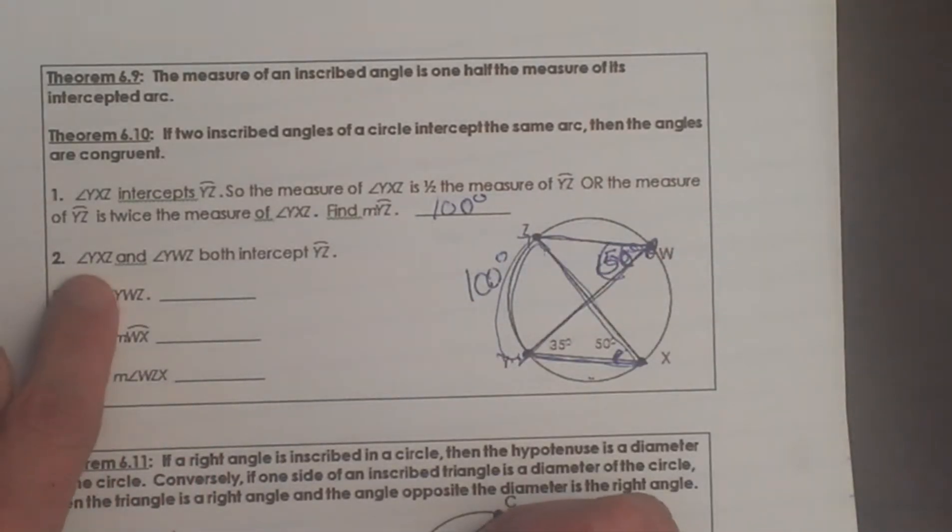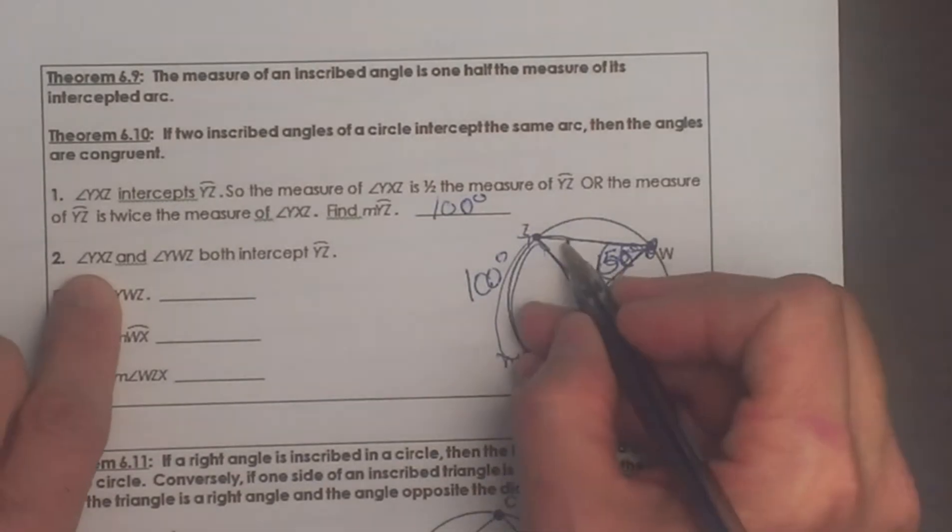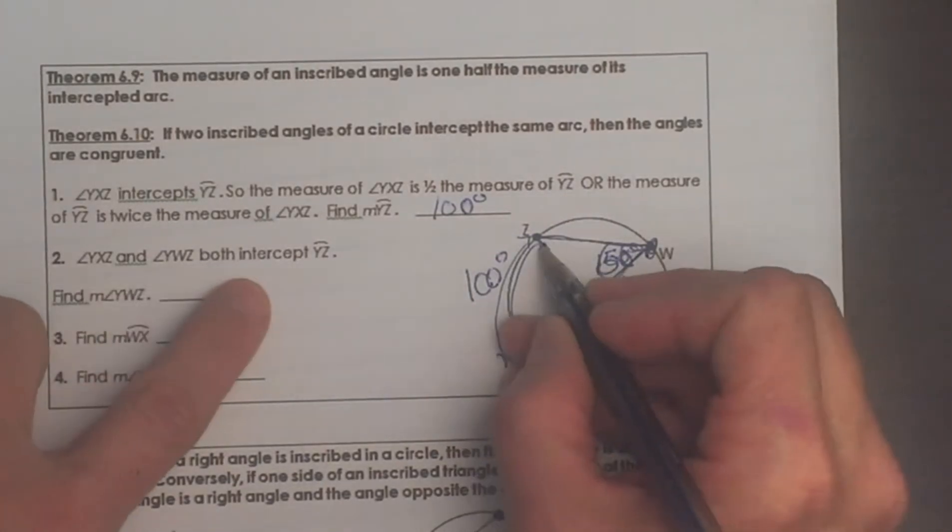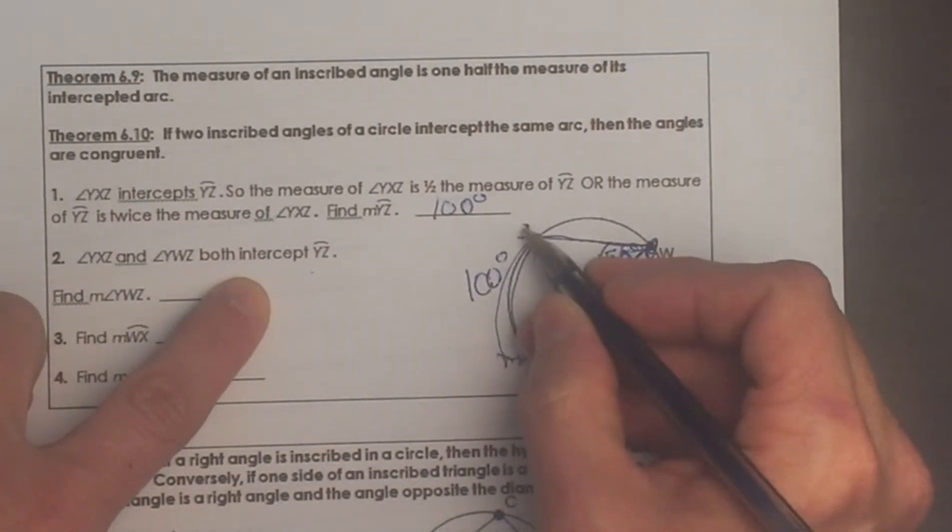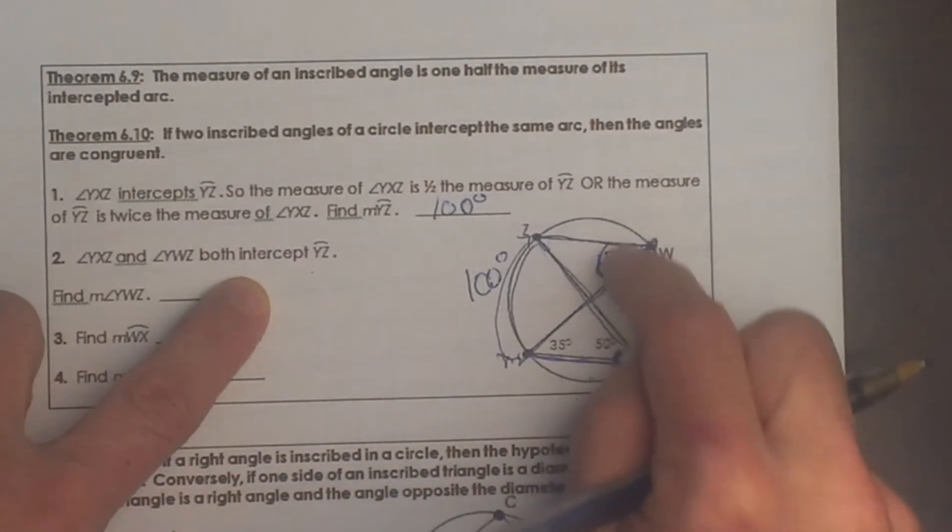So we know this arc right here is also 50 degrees because it is half of the 100 degree arc. So let's go through it. It says y, x, z and y, w, z both intercept this arc y, z. So that means these angles must be congruent to each other.